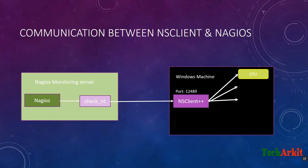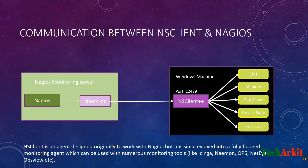Nagios asks the NSClient: what is your CPU utilization? The NSClient then executes its local CPU logic or CPU script and returns the results to the Nagios server. In a similar way, every scheduled time — every five minutes — the check_nt logic goes and queries the NSClient.